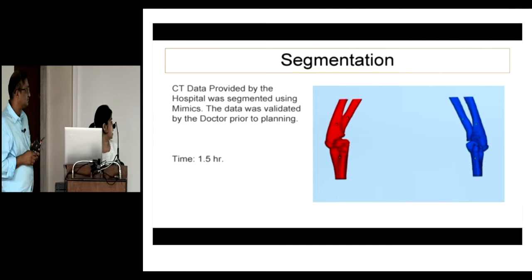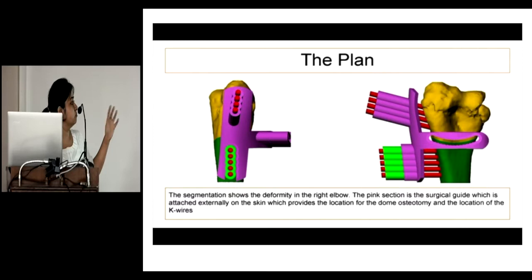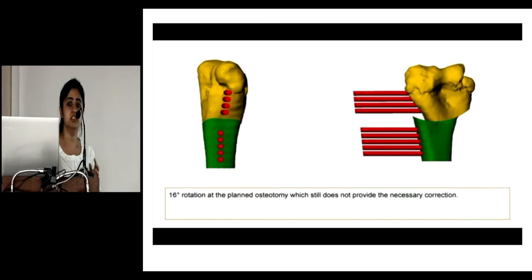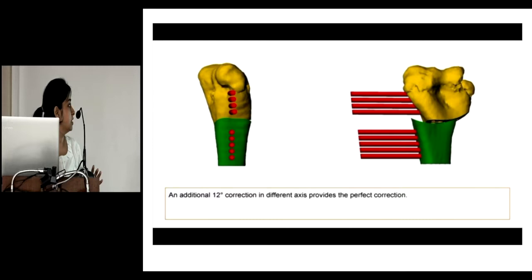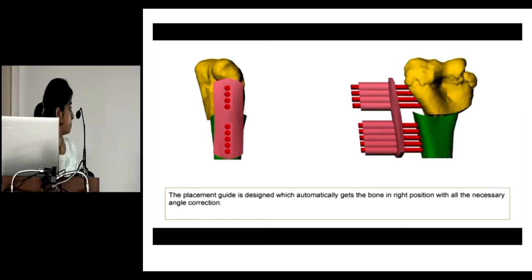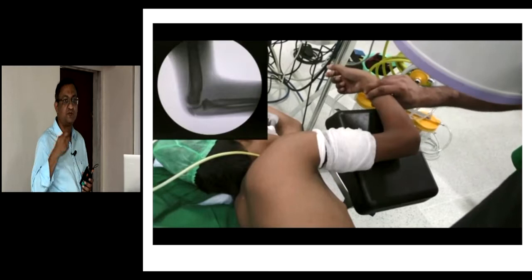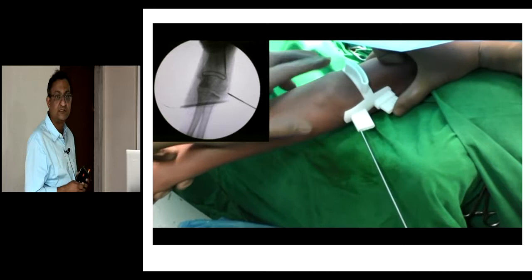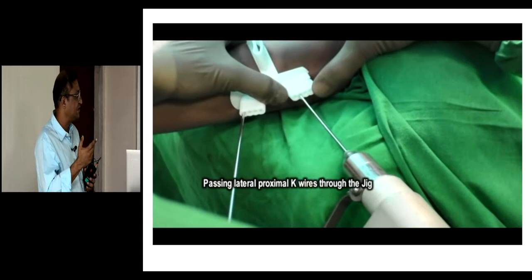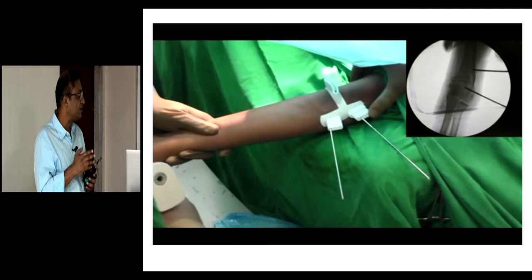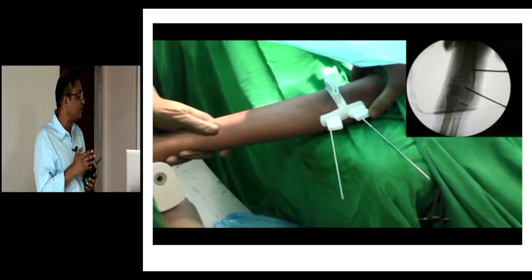These are the pre-operative X-rays. We did a CT scan of both elbows and performed virtual planning on the computer first, then got the 3D jig printed, ensuring that the rotation, varus, and extension were all corrected — all three deformities. The same principle applies: you start with the end in mind. Instead of eyeballing the wires or using X-ray or C-arm control, you use the jig. You pass wires proximally and distally through the jig, do the osteotomy through the jig, and the moment you remove the jig and get the wires parallel to each other, your correction is done.